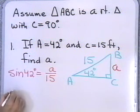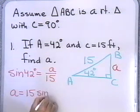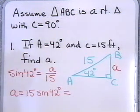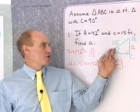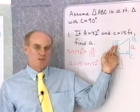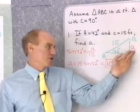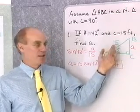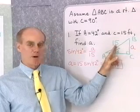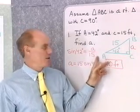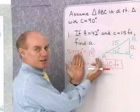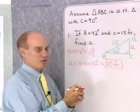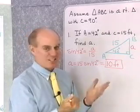Multiplying both sides of this equation by 15, I end up with A equals 15 times the sine of 42 degrees. Working that out on a calculator — 15 times about 0.6691 — I round to two significant digits because side C is given with two significant digits, and I get 10 feet. Side A is opposite and side C is the hypotenuse, so that's the sine function: sine 42° = A/15, giving A = 15 sin 42° = 10 feet.